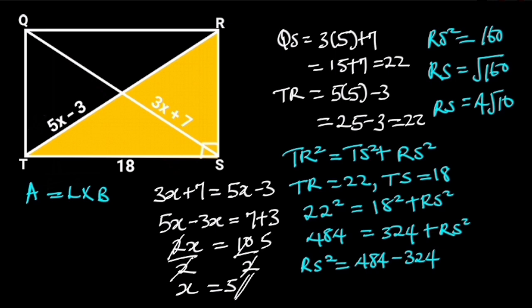Now we know the breadth. The area of the rectangle will be 18 times 4 root 10. 18 times 4 root 10 is equal to 72 root 10. Hence, the area of the rectangle is equal to 72 root 10 square units.